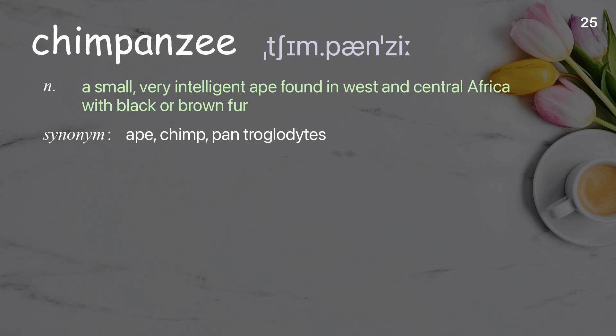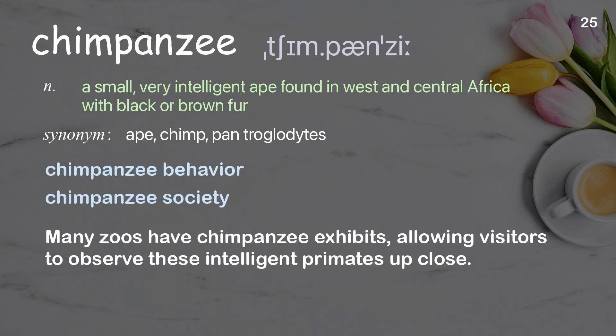Chimpanzee: a small, very intelligent ape found in west and central Africa with black or brown fur. Examples: chimpanzee behavior, chimpanzee society. Many zoos have chimpanzee exhibits allowing visitors to observe these intelligent primates up close.